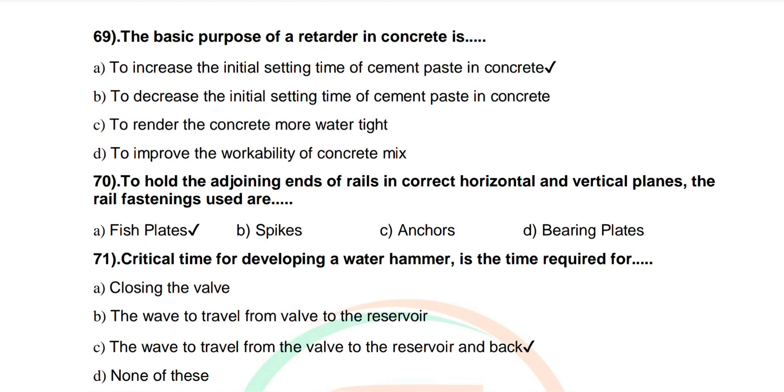Question number 70: To hold the adjoining ends of rails in correct horizontal and vertical planes, the rail fastenings used are fish plates, spikes, anchors, or bearing plates. Correct answer: fish plates.